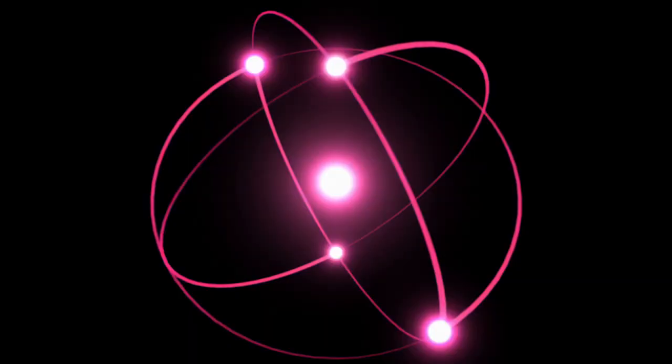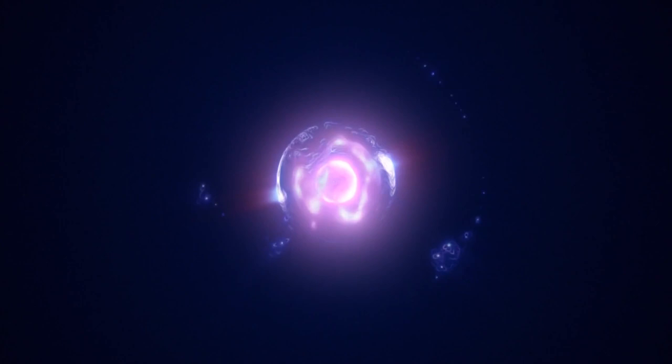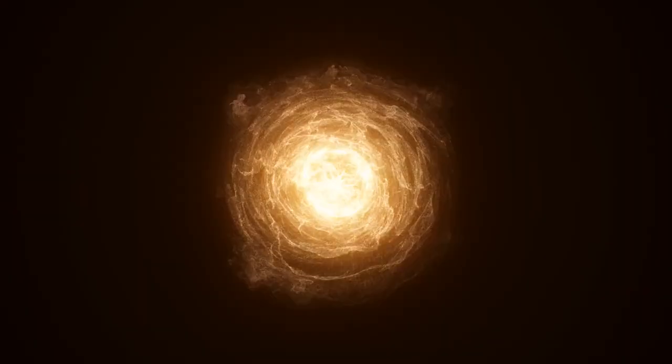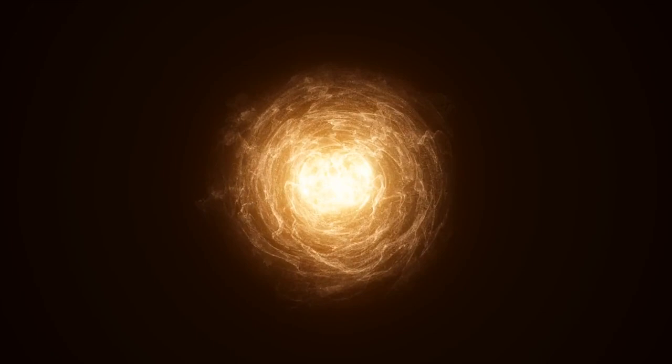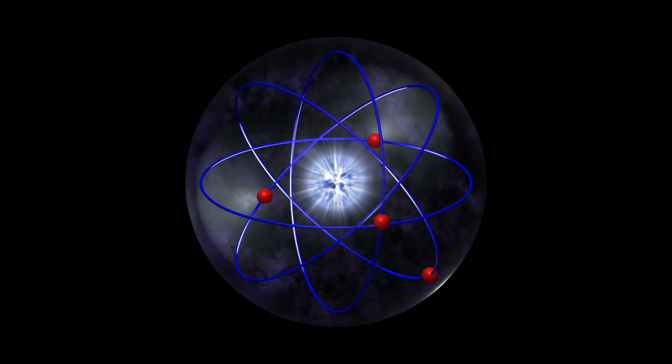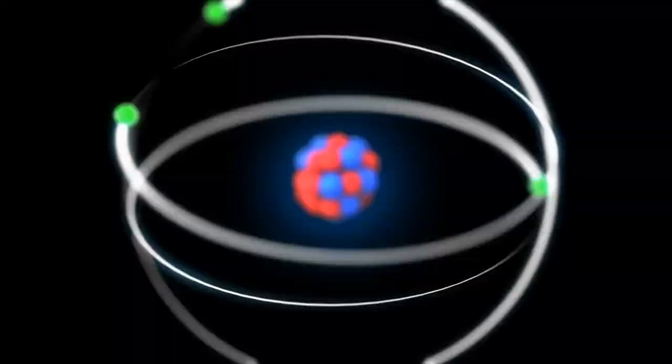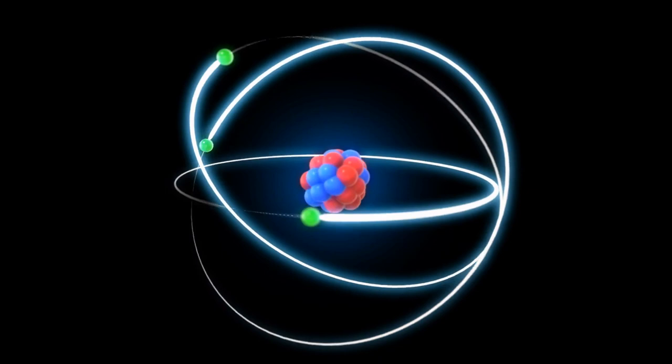Pulsars are even denser than standard neutron stars. The dense environment leads to the decay of neutrons into electrons and positrons on their surface, resulting in rapid rotation. A moving electric field generates a magnetic field. Charged particles like electrons in pulsars, encountering this magnetic field, accelerate in its direction, expelling their energy from the star in the form of radio waves. This intricate process sheds light on the origins of the mysterious radio signals.